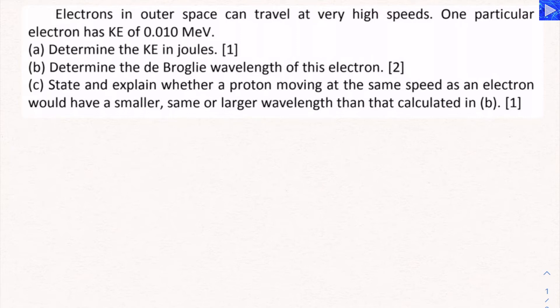Part A, determine the kinetic energy in joules. Part B, determine the de Broglie wavelength of the electron. And then part C, state and explain whether a proton moving at the same speed as an electron would have a smaller, the same, or a larger wavelength than the one calculated in part B.